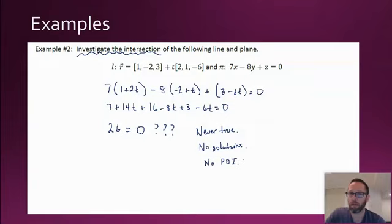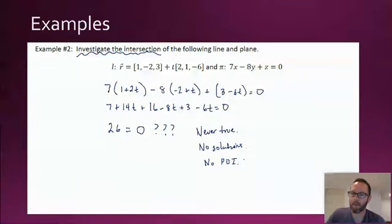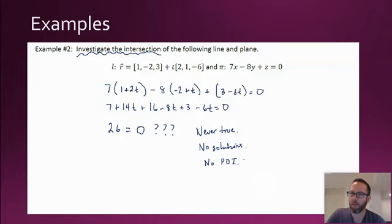An alarm bell should go off because 26 definitely does not equal zero. This statement is never true — 26 is never equal to zero. This means there are no solutions; there is no point of intersection. This is case two, where the plane and the line are parallel to each other. The T terms go away and you're left with something like 26 equals zero. That doesn't mean you made a mistake — it means there are no solutions.